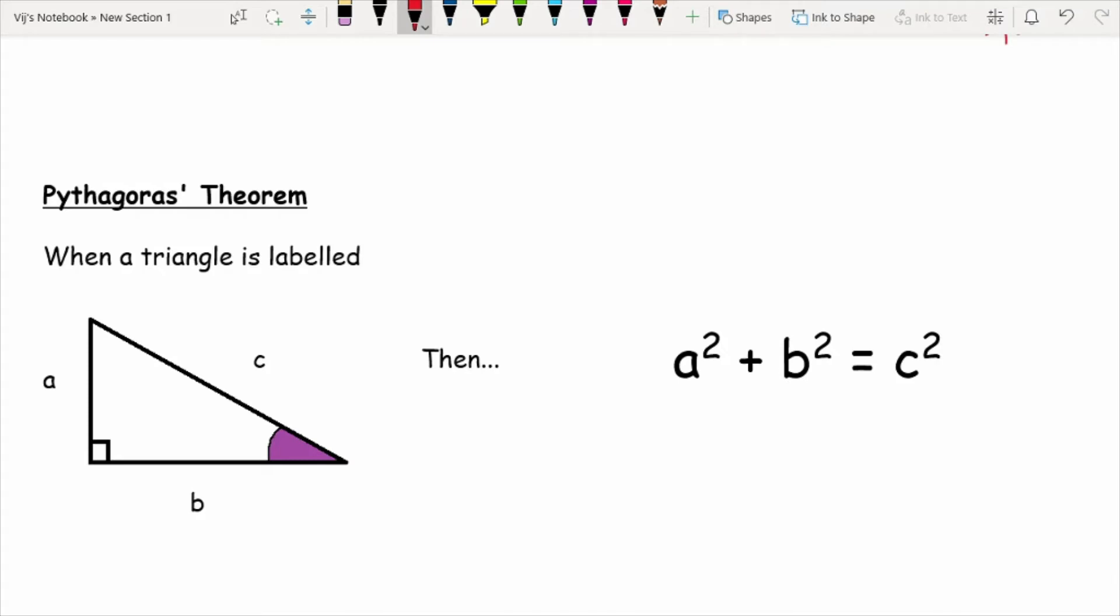And this is a really important theory that you need to remember. And this is what Pythagoras is more prominently famous for, is discovering this theory. Now, as well as remembering this formula, you also need to remember the labeling of this triangle, which is what this video is going to try and get you to be more proficient at.